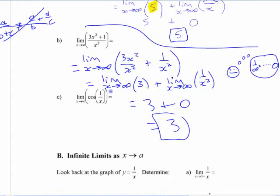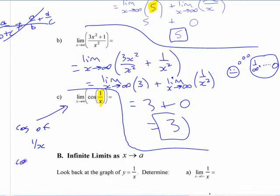This limit of cosine of 1 over x, you can't really use the same kind of logic because this is not adding two functions together. This is a composition, a function of a function. So, you have to think about the inside function first if you know the limit of that. It's cosine of 1 over x. It's a composition, composition of functions.